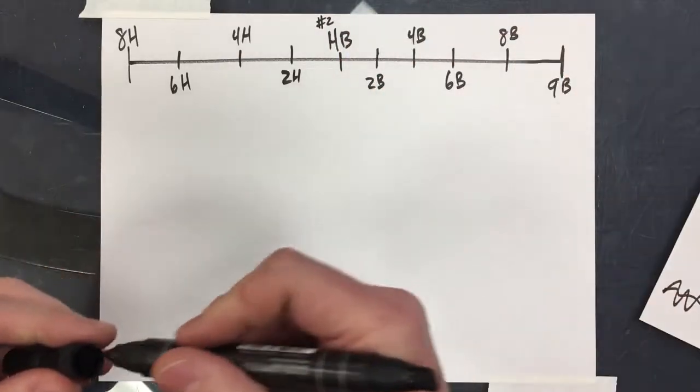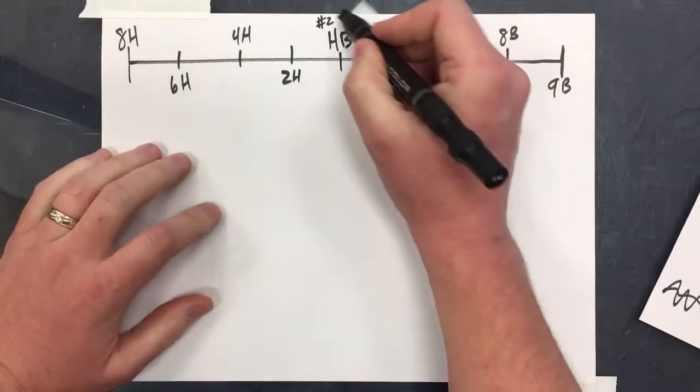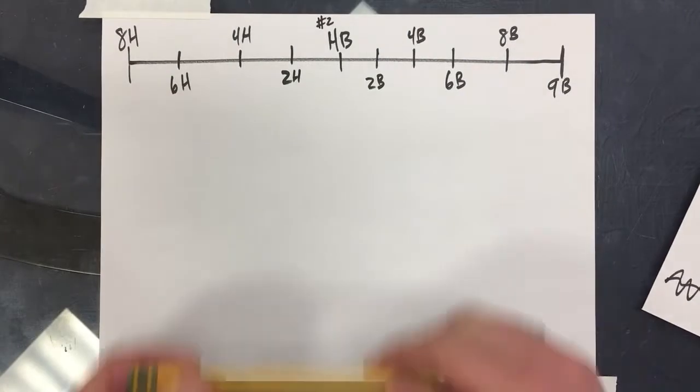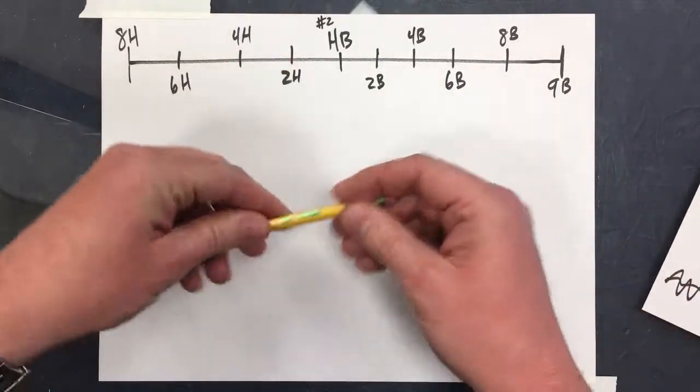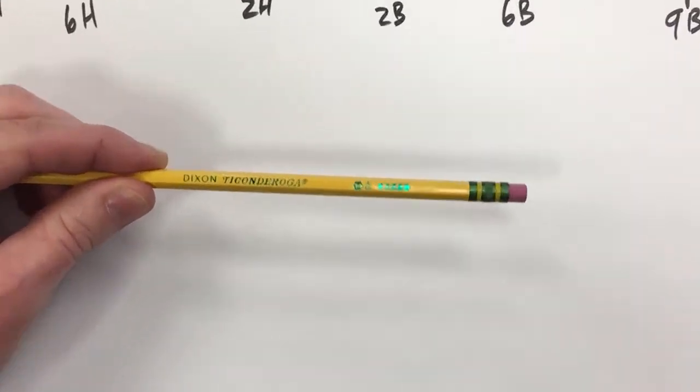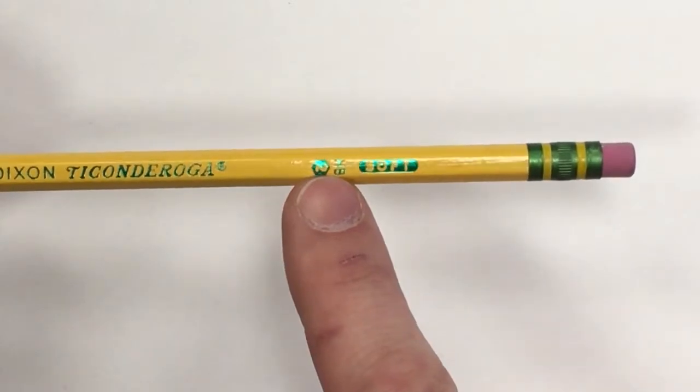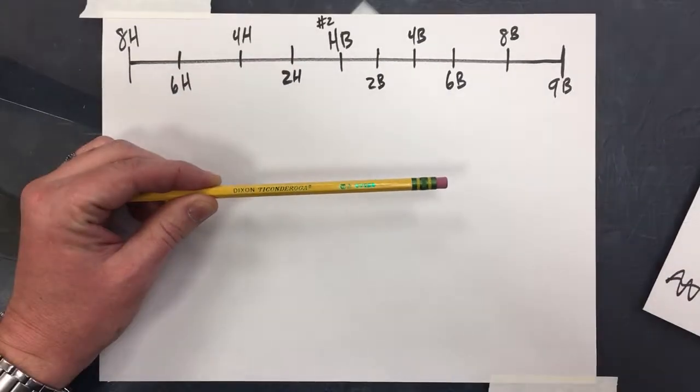Dixon Ticonderoga or something like that. That's what an HB is. You've probably seen these kind of pencils, just the number two. If we zoom in here you can see it's a soft-leaded pencil. It says HB number two. Everybody's familiar with those, they're real popular for taking tests.